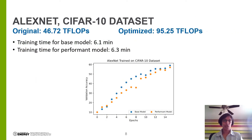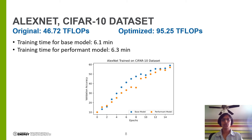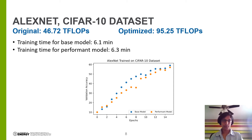By using DPiper to optimize neural network layers and full architectures, we see a significant improvement in FLOPs performance for inference purposes when comparing original models to optimized models. When I say inference, I'm referring to the idea of using an already trained model to accomplish a task. The original AlexNet achieves 46.72 teraflops for one forward pass over the network, while the optimized network achieves 95.25 teraflops — about double the performance of the original.